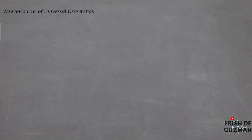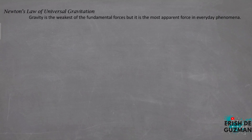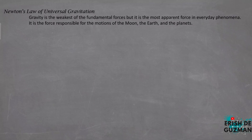Aside from developing the three laws of motion, Isaac Newton also introduced the law of universal gravitation. Gravity is the weakest of the fundamental forces, but it is the most apparent force in everyday phenomena, and it is the force responsible for the motions of the Moon, the Earth, and the other planets. Yet the connection between objects falling on Earth and planets moving in their orbits was not known before Newton.